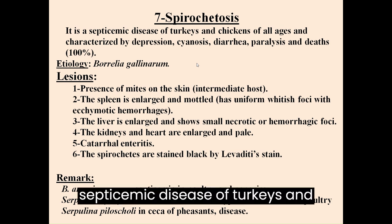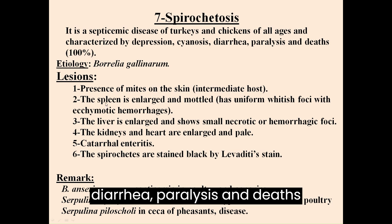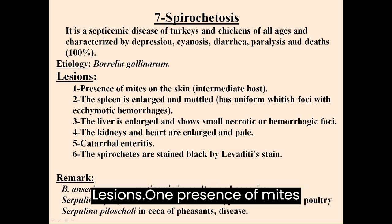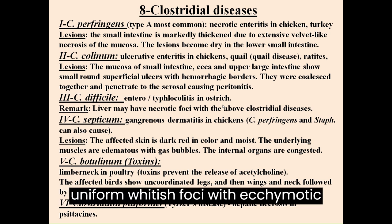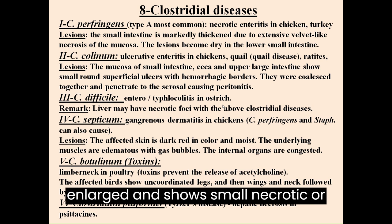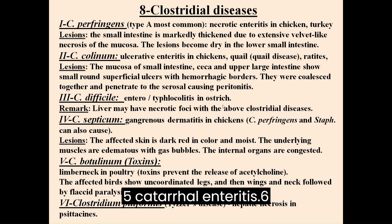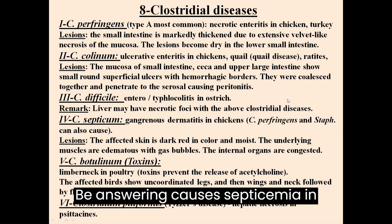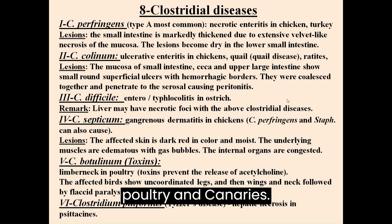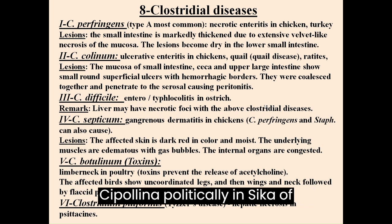Spirochetosis is a septicemic disease of turkeys and chickens of all ages, characterized by depression, cyanosis, diarrhea, paralysis and 100% mortality. Etiology: Borrelia anserina. Lesions: 1. Presence of mites on the skin (intermediate host). 2. Spleen is enlarged and mottled with uniform whitish foci and ecchymotic hemorrhages. 3. Liver is enlarged with small necrotic or hemorrhagic foci. 4. Kidneys and heart are enlarged and pale. 5. Catarrhal enteritis. 6. Spirochetes are stained black by Levaditi stain. Note: B. anserina causes septicemia in poultry and canaries; Serpulina hyodysenteriae is associated with typhlitis in rheas and poultry; Serpulina pilosicoli in ceca of pheasants.